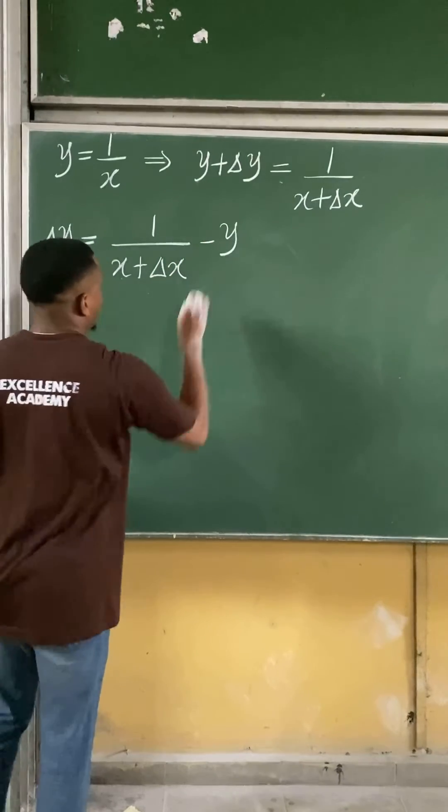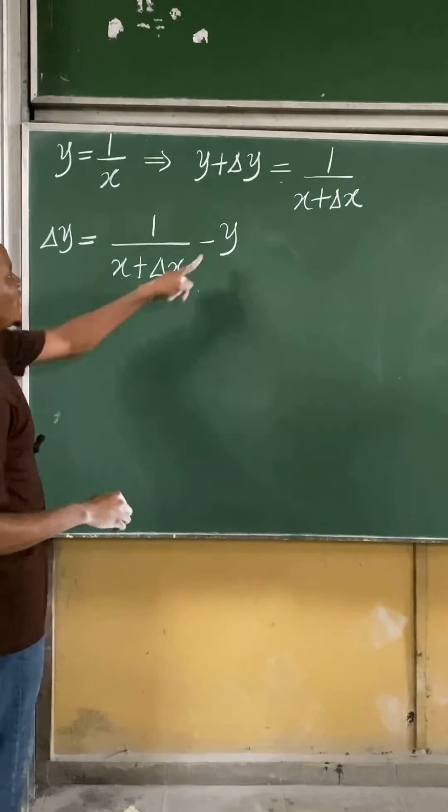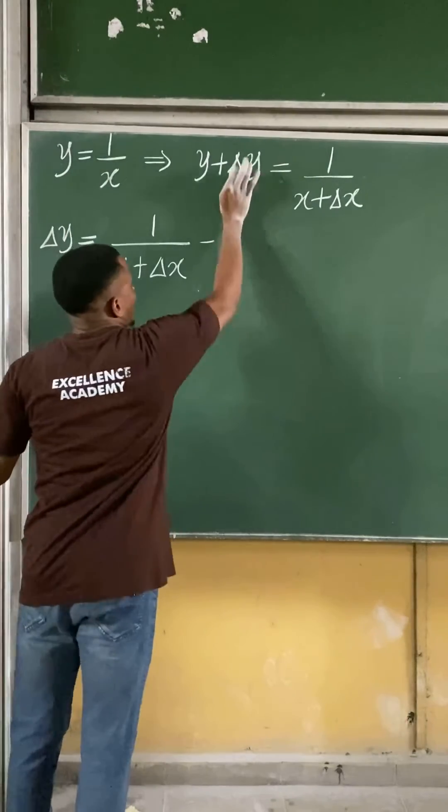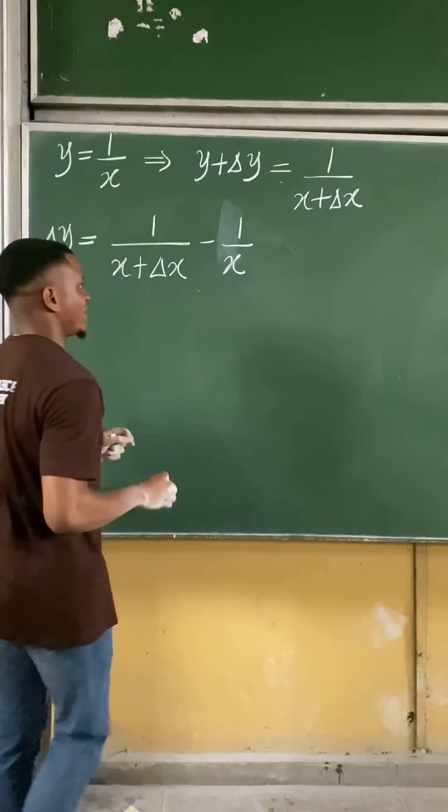y comes and becomes minus y. But already we have that y is equal to 1 over x here. I'll replace this value as being equal to 1 over x.